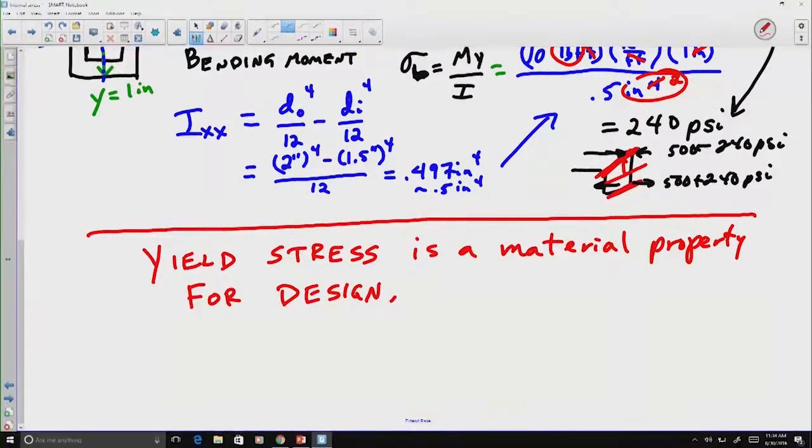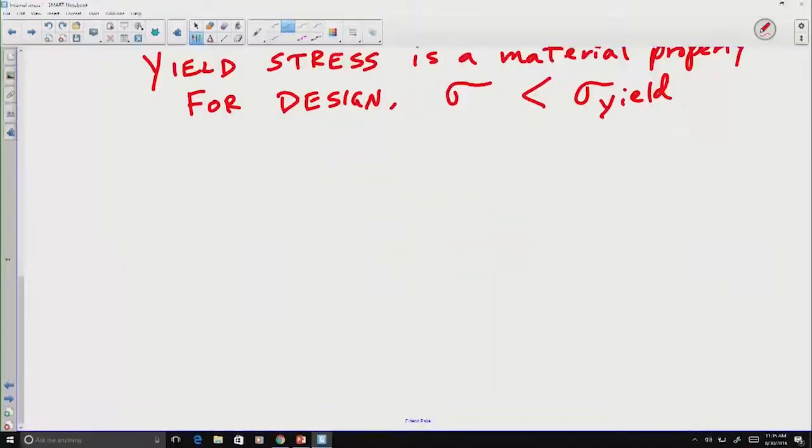Yield stress is a material property for design that indicates when the design is going to fail. And when you're designing, you hope that whatever axial stress you have is less than the yield stress of the material property you are using. If it's greater than that yield stress, then that material is going to deform and change what it looks like. Perhaps break, perhaps stretch in a fashion that is permanent, and then you will no longer be able to use the original design as it was intended.